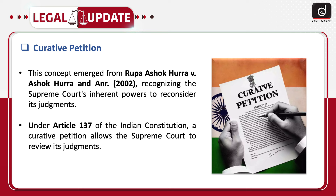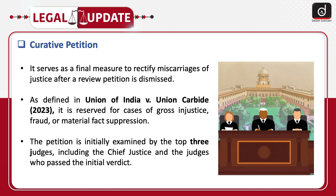Under Article 137 of the Indian Constitution, a curative petition allows the Supreme Court to review its judgments. It serves as a final measure to rectify miscarriages of justice after a review petition is dismissed. As defined in Union of India vs. Union Carbide (2023), it is reserved for cases of gross injustice, fraud, or material fact suppression.